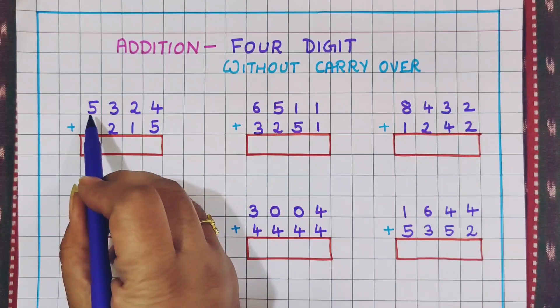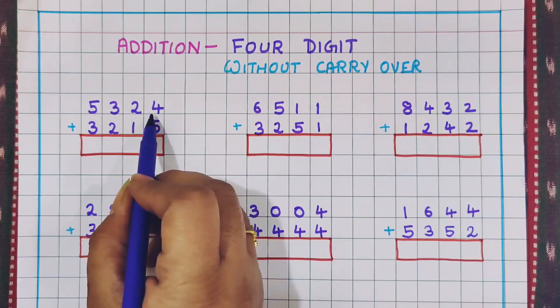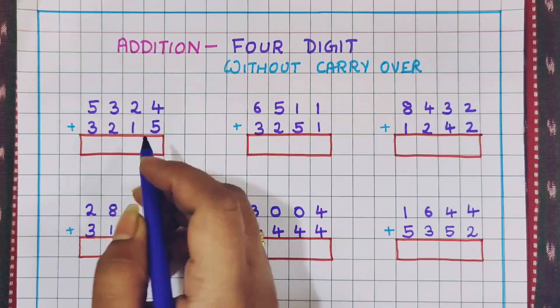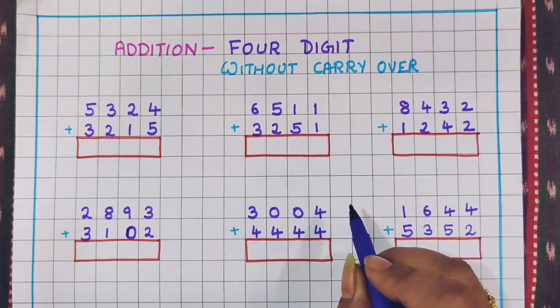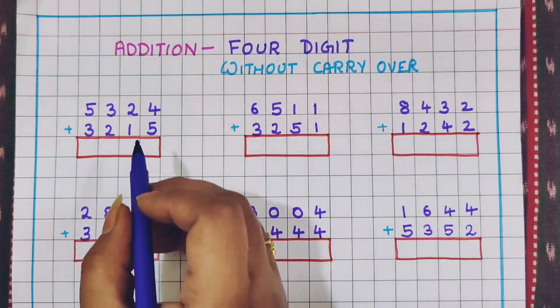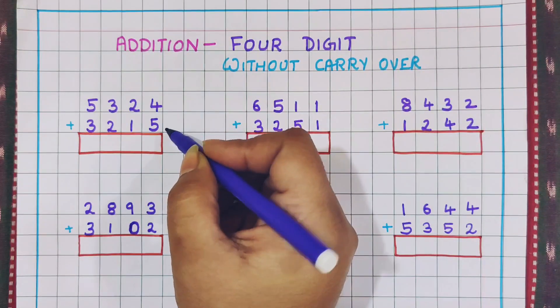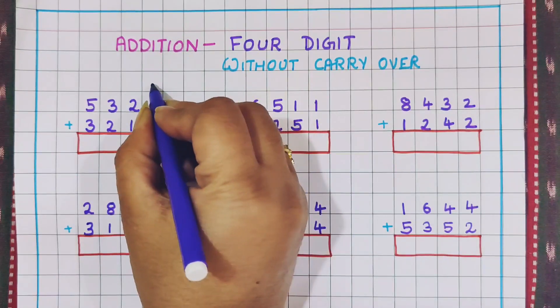Now the first problem is 5,324 plus 3,215. We have already learned previously in the three digit addition that always the addition starts from the ones place. Let's see which is the ones place.